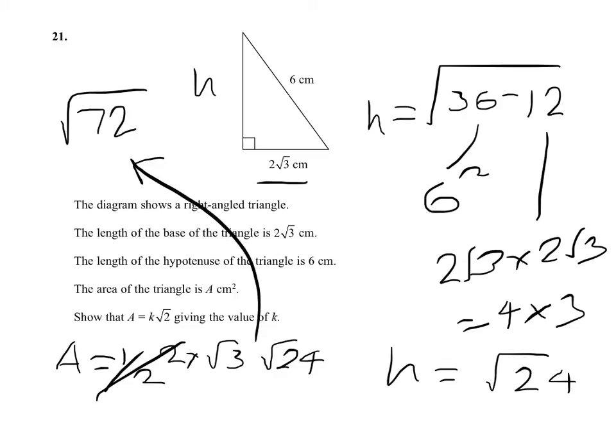So I'll move that up to there. Now root 72 is root 36 times 2, and we can take the 36 outside and write it as 6. So our answer is 6 root 2, so the value of k is 6. And there's that question done for you.